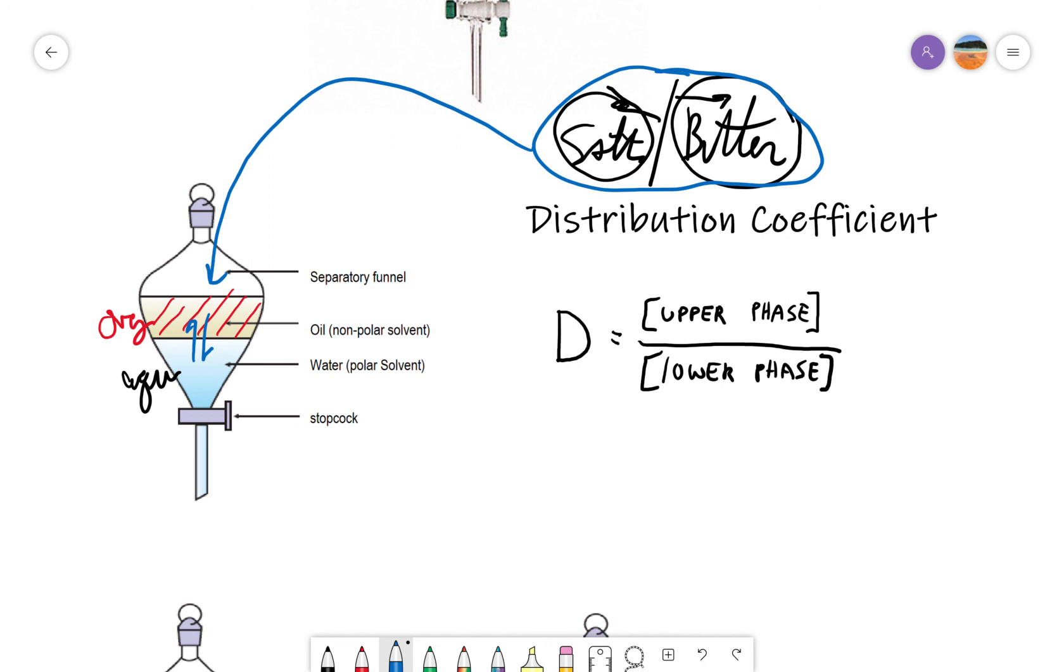The distribution coefficient is, in a sense, sort of like an equilibrium constant, except what we're really looking at now is the concentration of one compound in the upper phase, the organic layer, compared to its solubility in the aqueous layer, the lower phase.